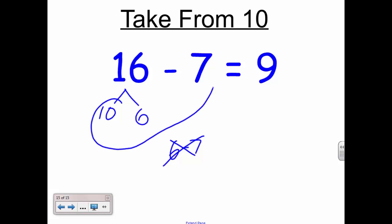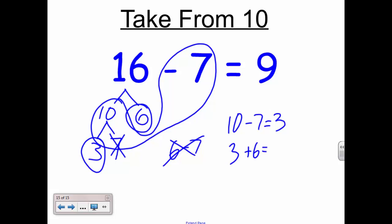So I know if I have ten, I can take seven away from that, and that means there are three left. So out of my ten, I've taken seven away and I have three left. But then I still have six more left. So I know that three plus six, what's left out of my sixteen, gives me nine. So therefore, sixteen minus seven must also be nine.